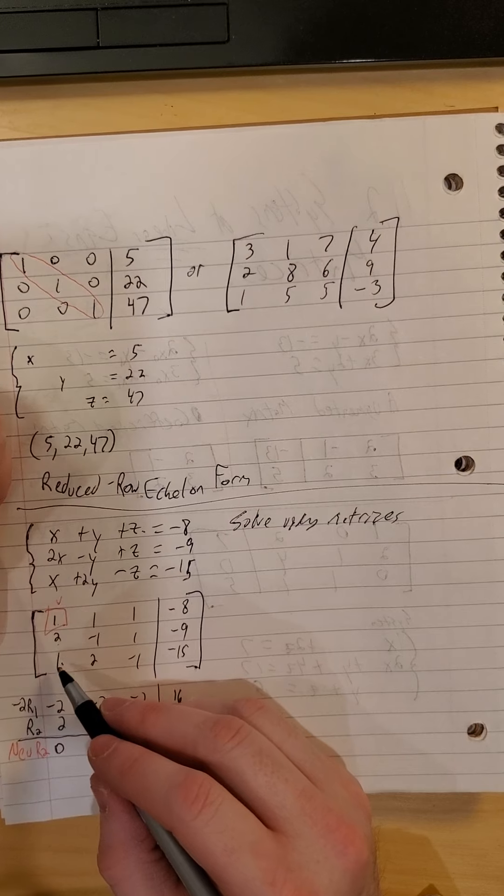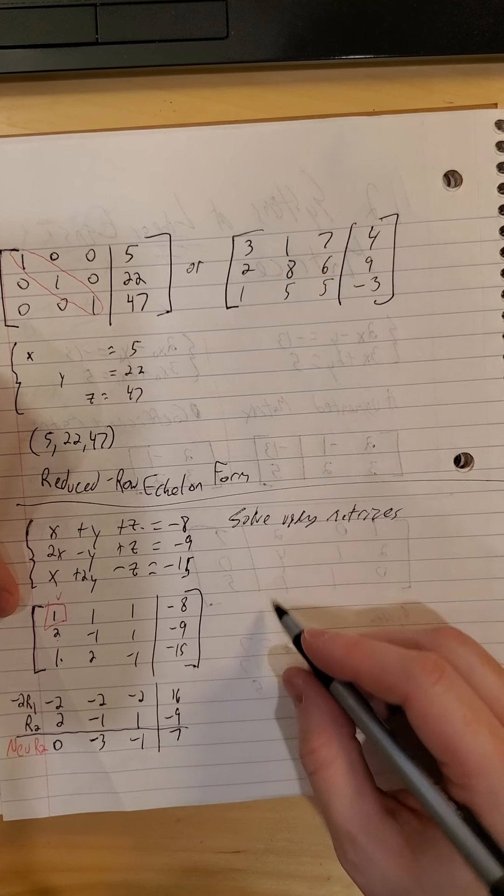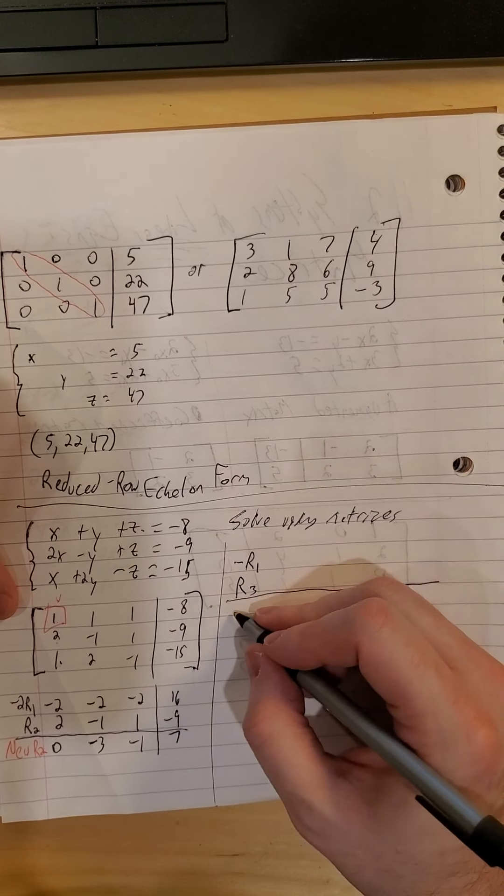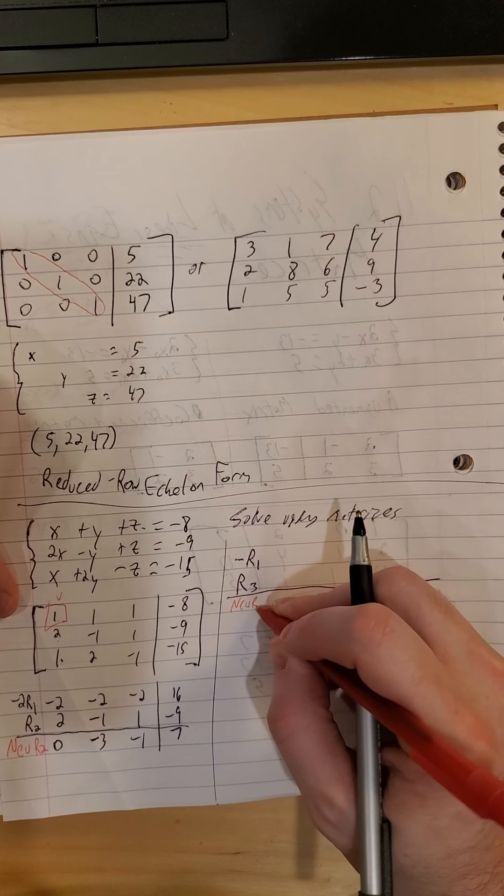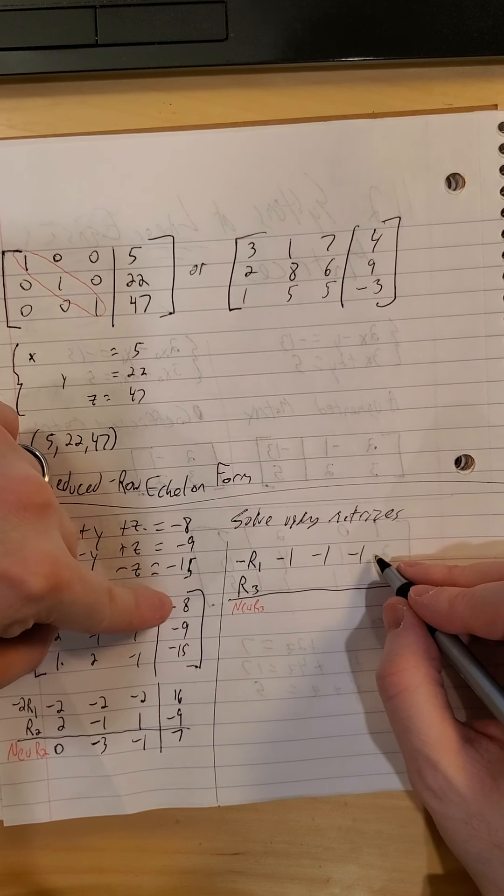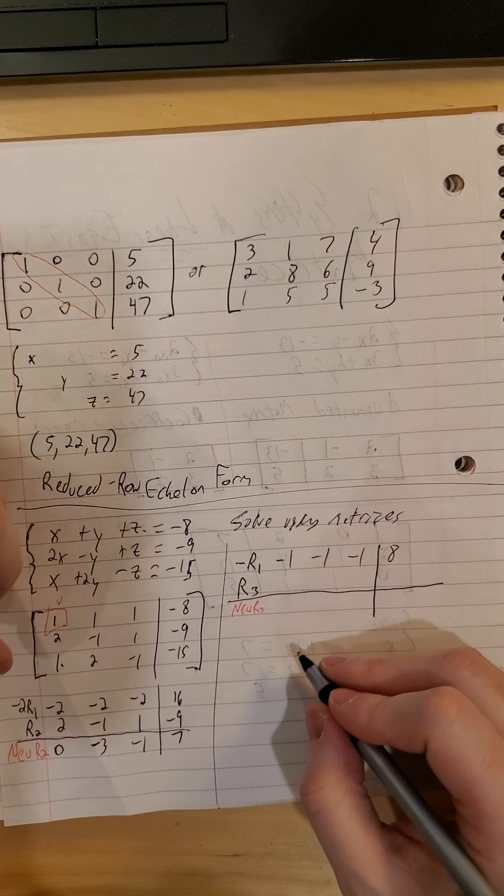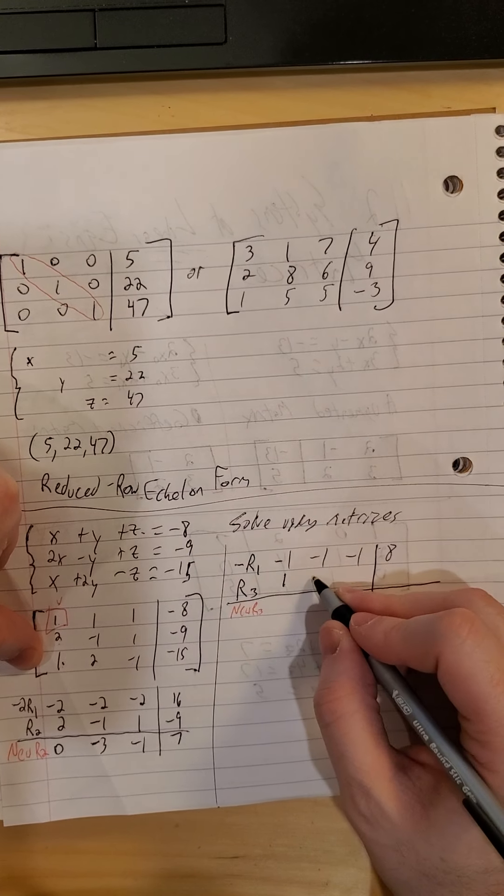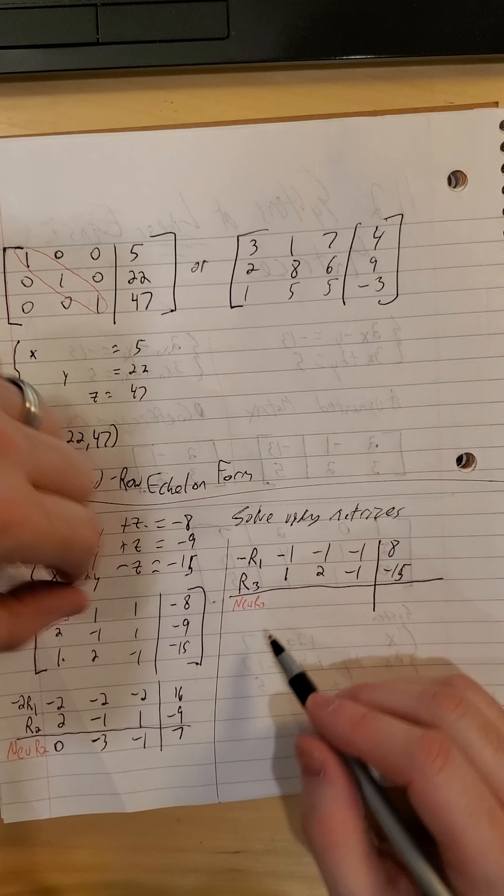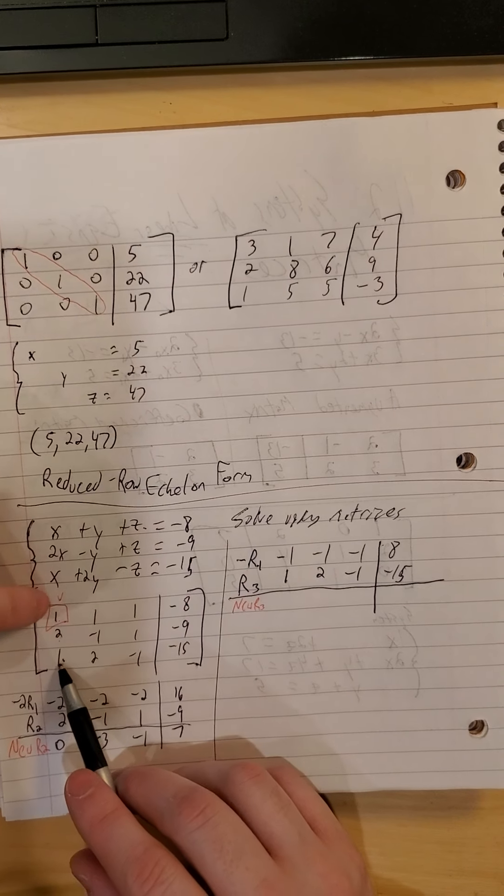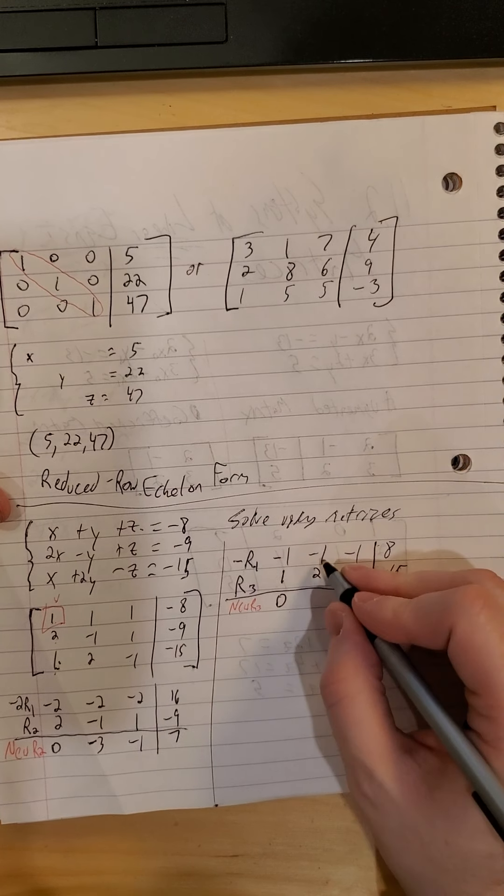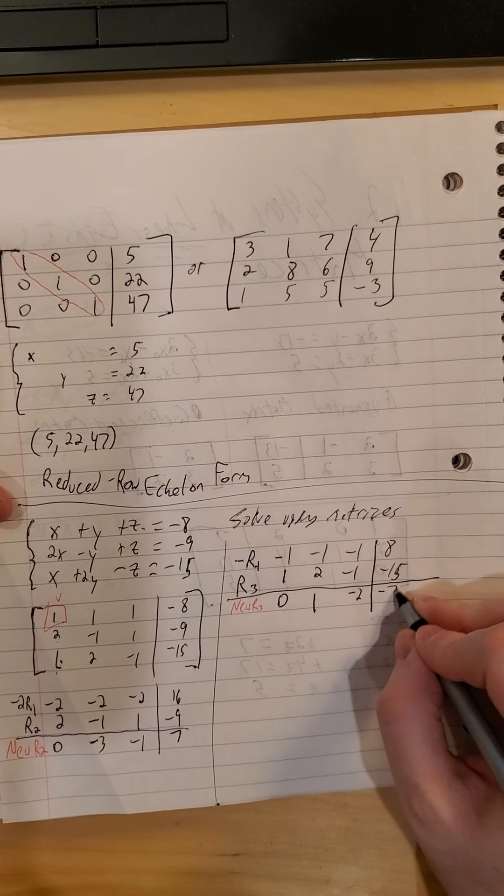Now I also want to turn this guy into a zero. So to do that, I'll do the opposite of row 1, and I'll keep row 3. And my answer will be the new row 3. So opposite of row 1, negative 1, negative 1, negative 1, positive 8. Row 3, I'd keep it as it was. 1, 2, negative 1, negative 15. My goal was to make this into a zero. That's why we did the opposite of row 1. So if I do a negative 1 plus 1, I get the zero there that I was after. So I have a zero, a 1, a negative 2, and a negative 7.